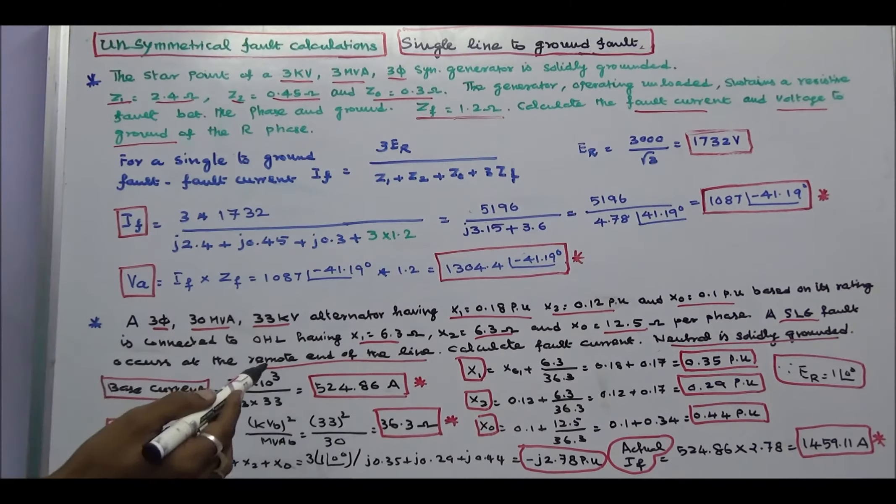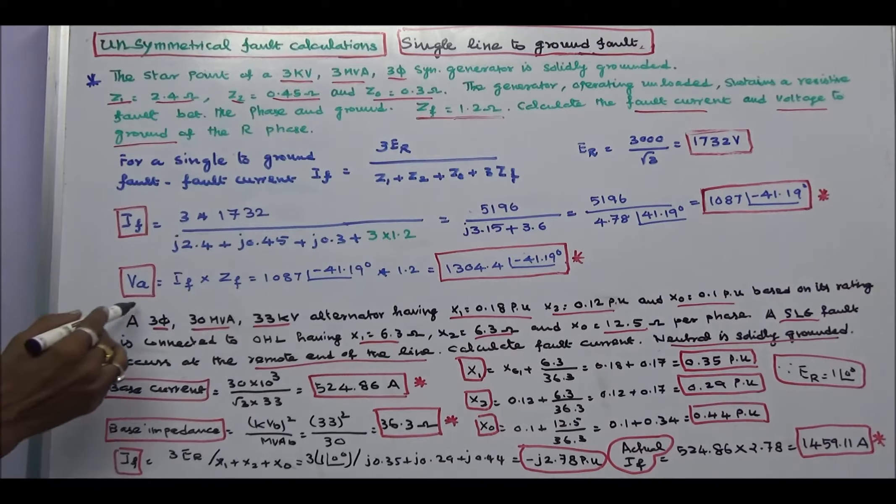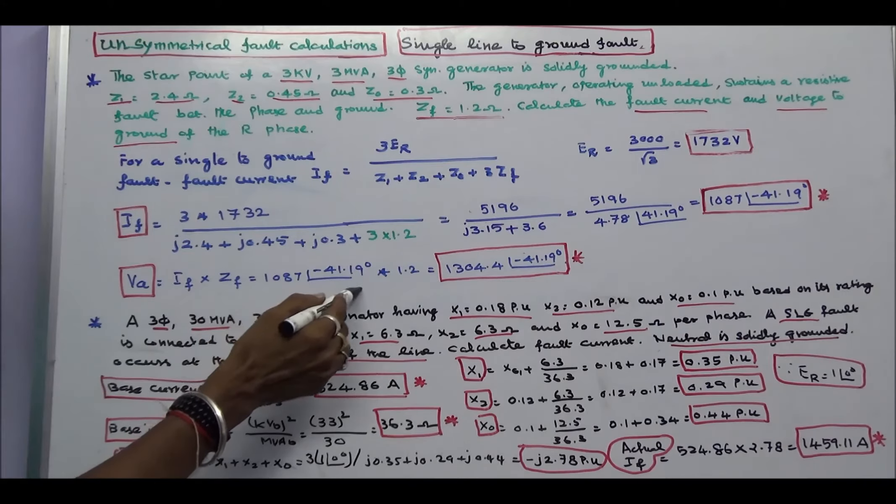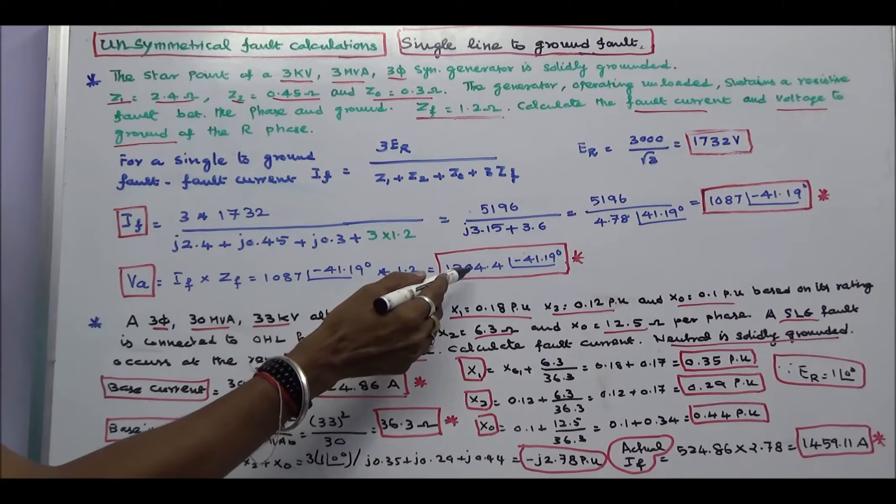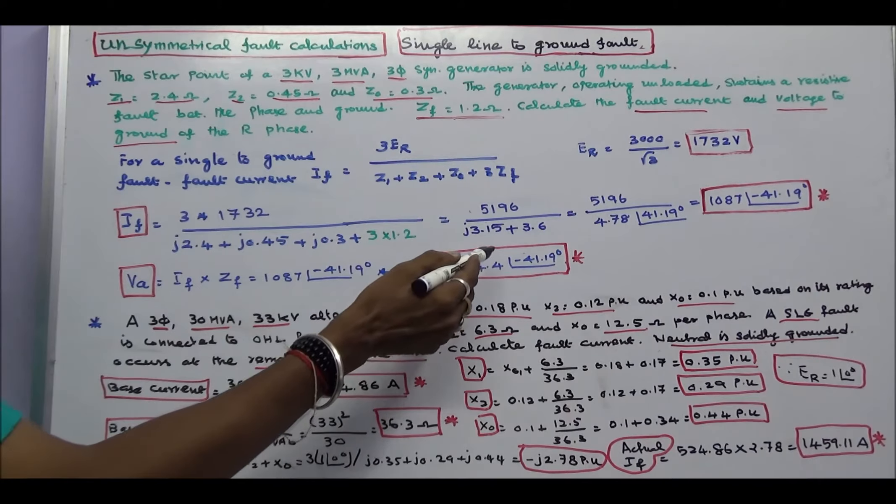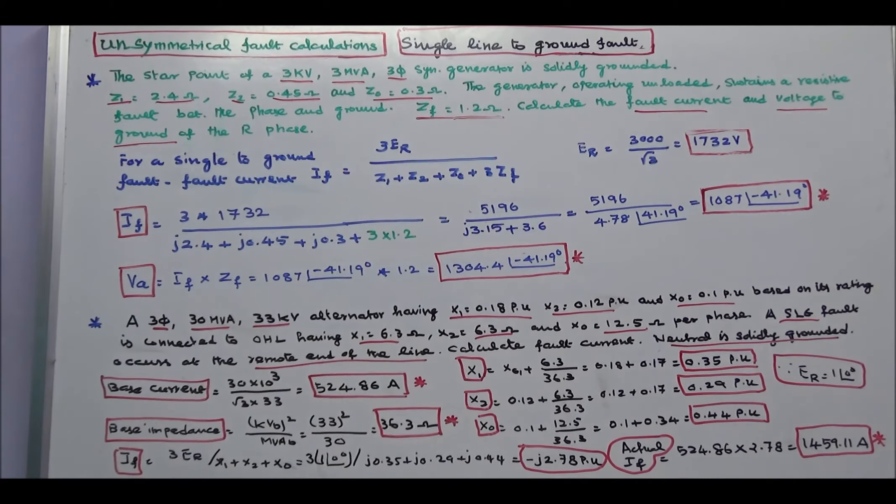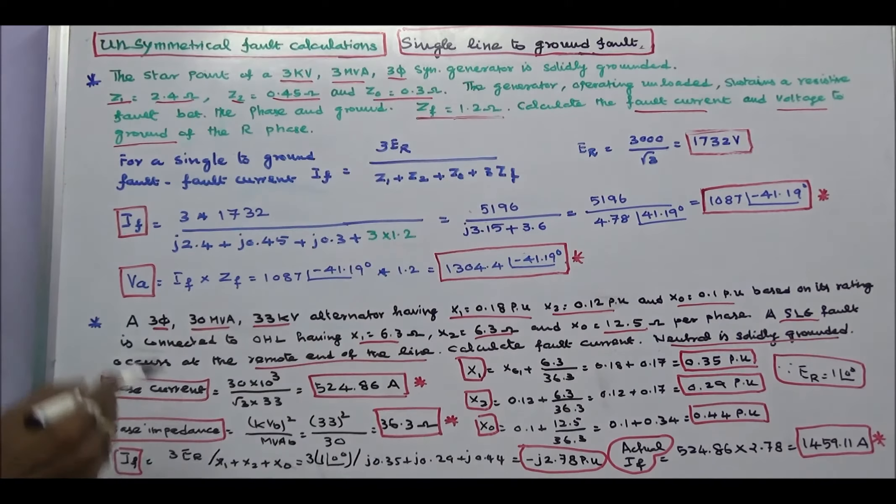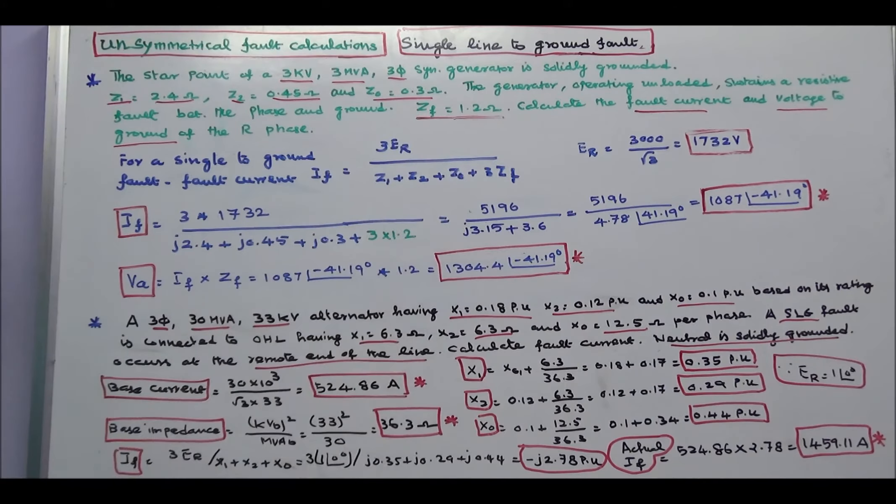Next we have to calculate voltage to ground of the R phase. Vf is equal to IF into Zf. IF is equal to 1087 angle minus 41.19 degrees into 1.2. That is equal to 1304.4 angle minus 41.19 degrees. Fault current is 1087 angle minus 41.19 degrees. Vf is 1304.4 angle minus 41.19 degrees.